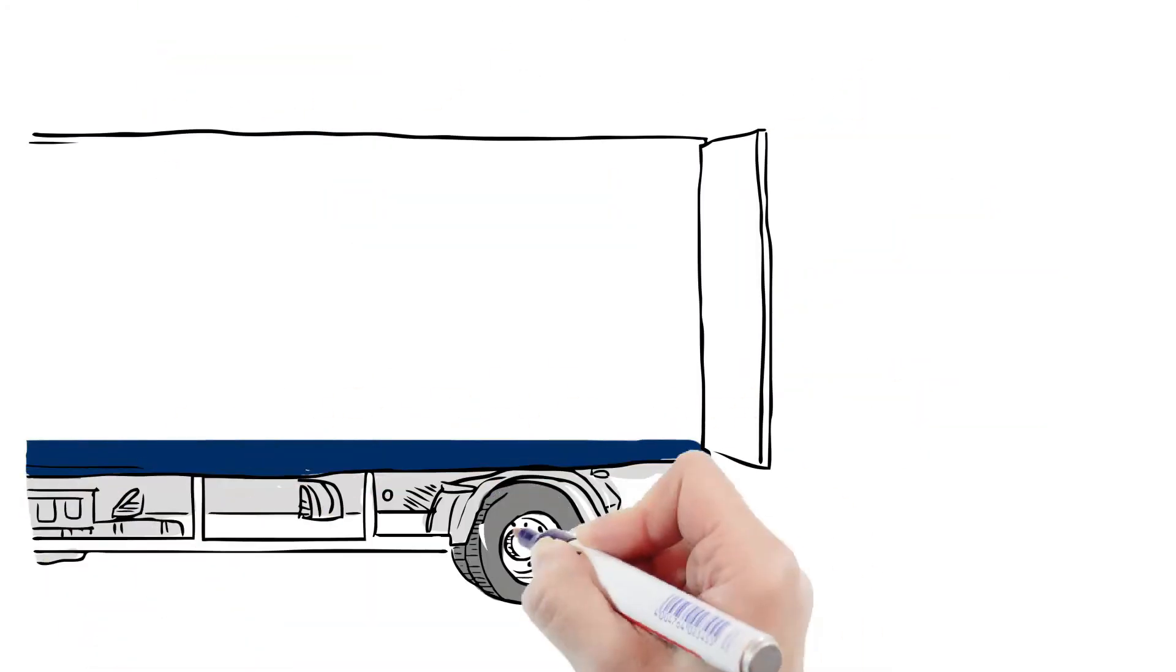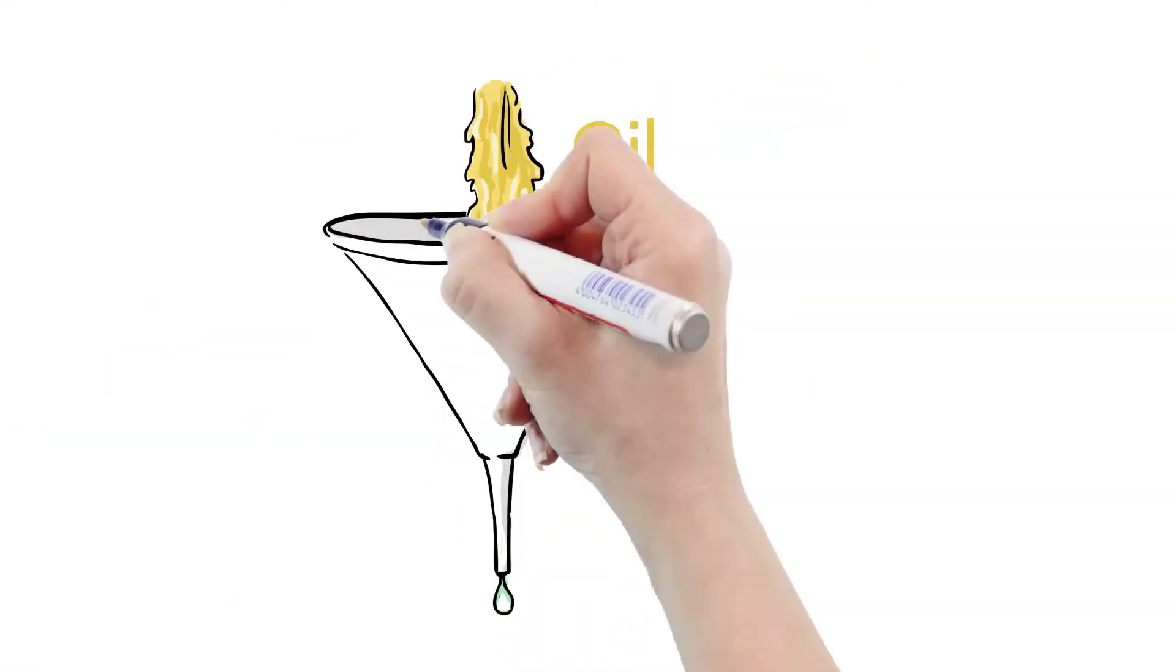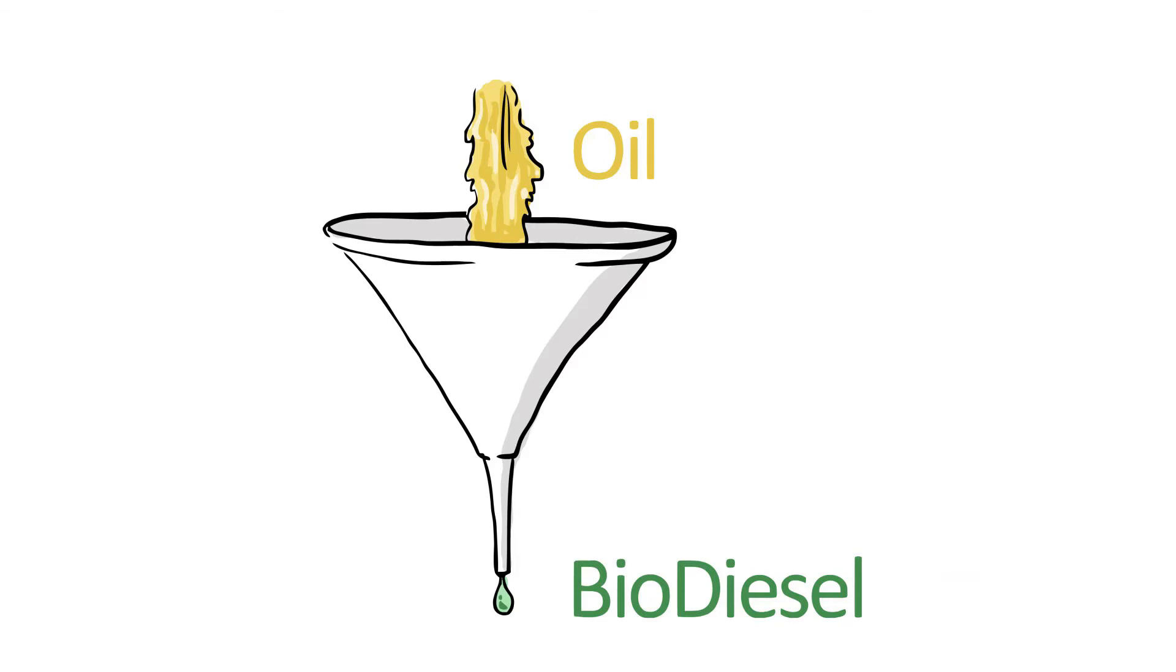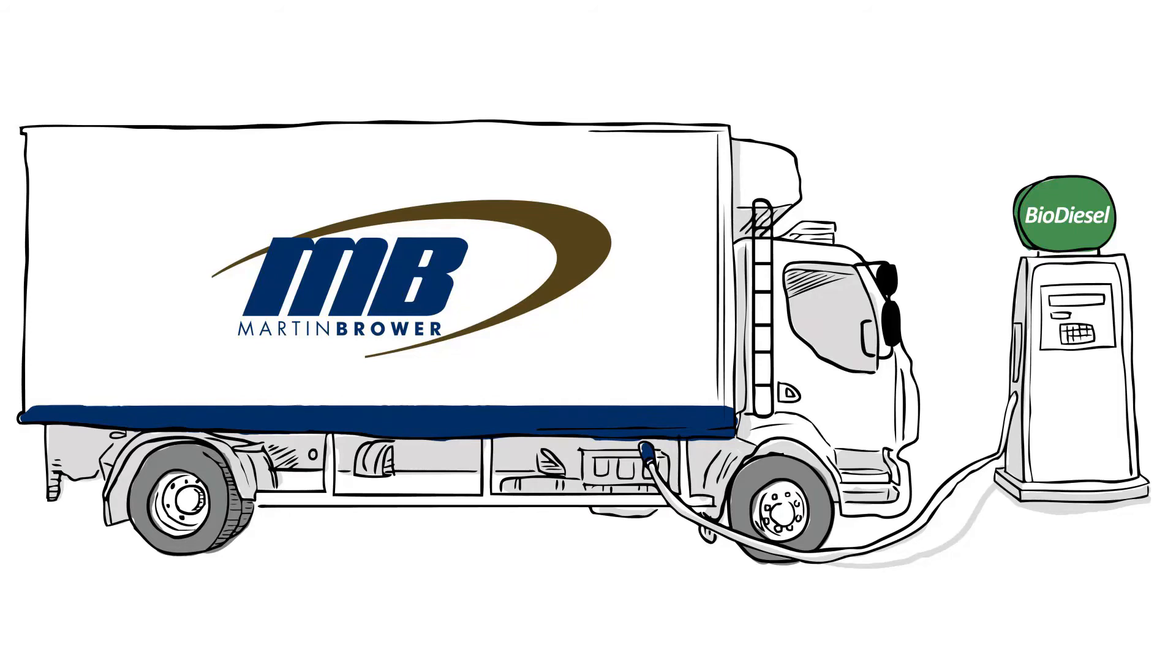Restaurants collect their used cooking oil in containers. Our drivers pick up the containers and return them to our distribution centers. The oil is sent to a recycling plant and converted to biodiesel. This biodiesel is used to fuel our vehicles for restaurant deliveries.